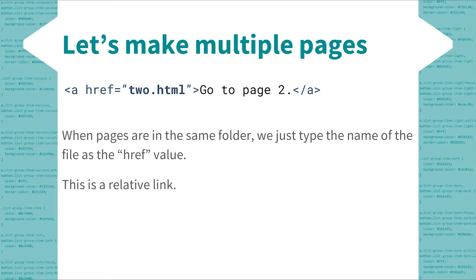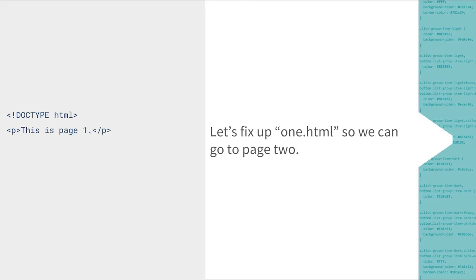Let's see what this looks like — we add the anchor tag right below our paragraph tag in one.html. When we open this in a web browser, we'll see a new link, and whenever we click it we'll be redirected to page two. That's basically links. There's a little bit more to know, but we'll cover that in the coming days during the bootcamp.